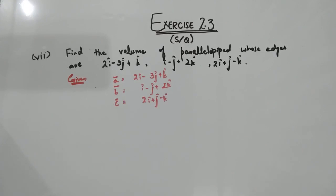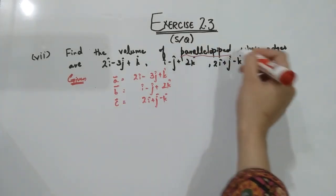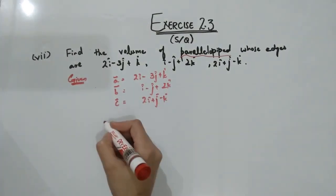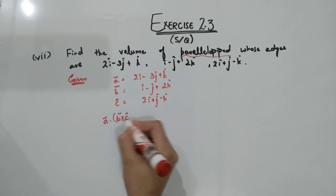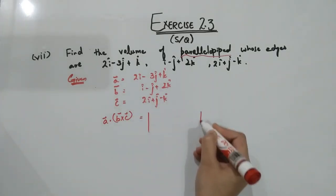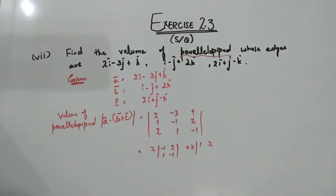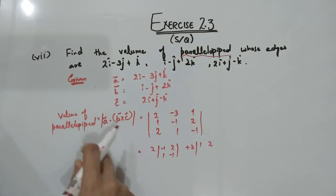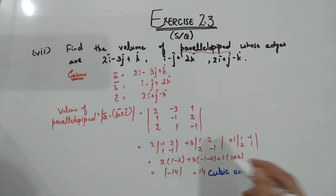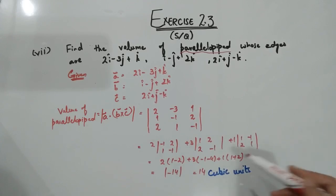In part number seven, you have to find the volume of a parallelepiped, which is the 3D version of a parallelogram. The volume is given by the scalar triple product formula — take the determinant and expand. The result is minus 14, but since volume is always positive, we take the absolute value: 14 cubic units. Units must be mentioned.